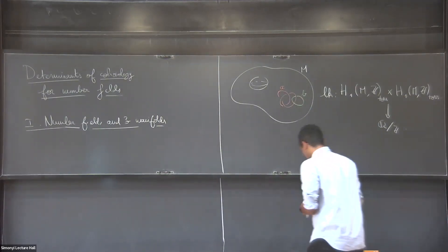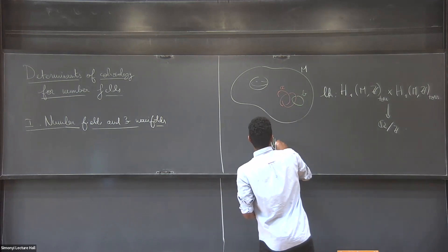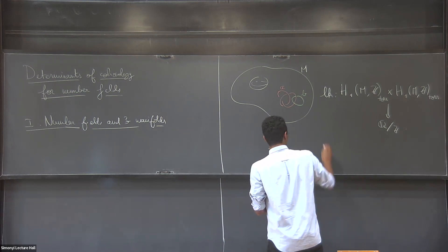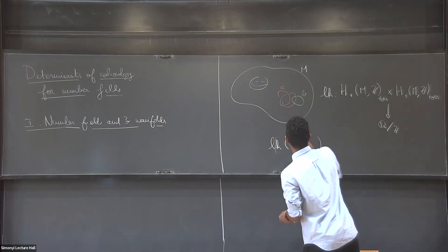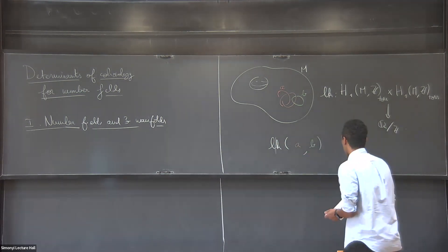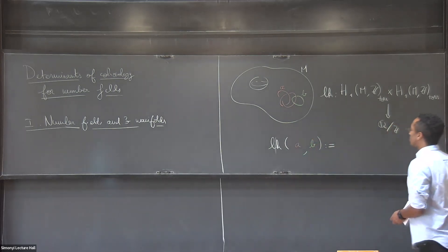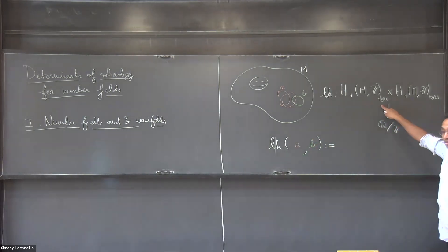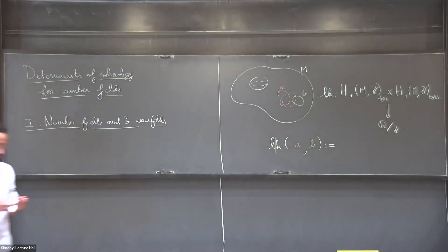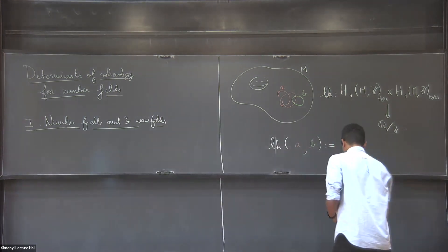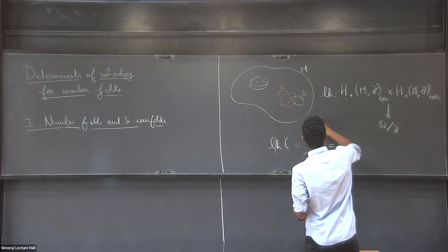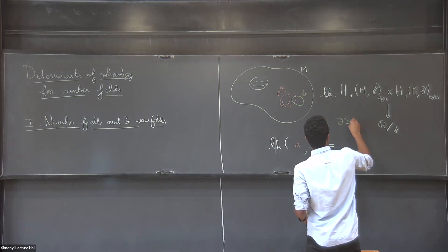And this linking pairing is defined in the following way. Since it's a torsion class, it means that some multiple of it is zero in this homology. Some multiple of it is the boundary of an embedded surface. So I can write down that B, for example, is equal to, or M times B is equal to the boundary of some embedded surface.